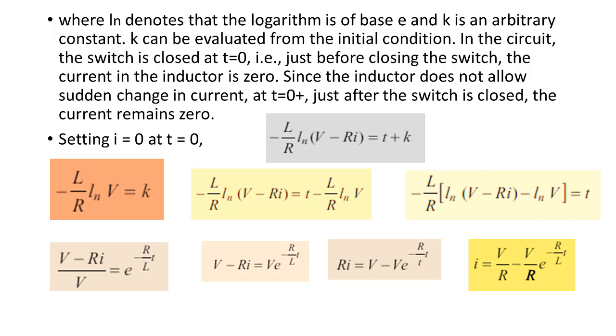Now this equation comes in the form of ln. Take the exponential at both sides. After taking the exponential, we get the value of current here which is equal to V/R minus V/R times e to the minus R/L times t.